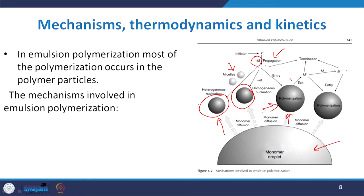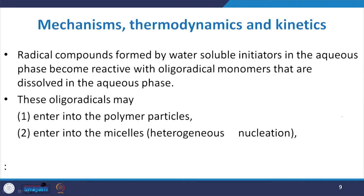Regarding the termination step, termination always requires certain approaches: one is the combination of free radicals, and another involves the combination of monomer particles with inhibitors. Based on these factors, the process can proceed through either pathway to give polymers. This is the basic mechanism involved in emulsion polymerization.